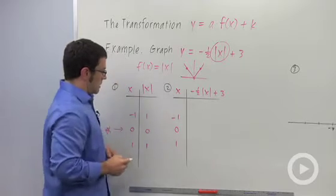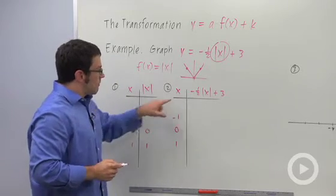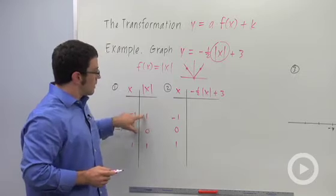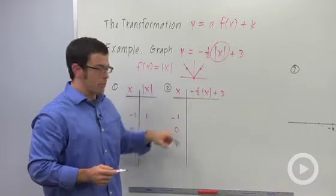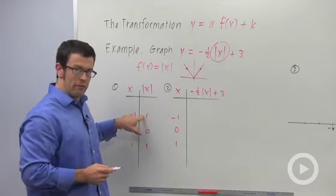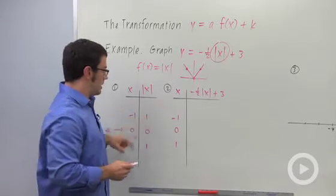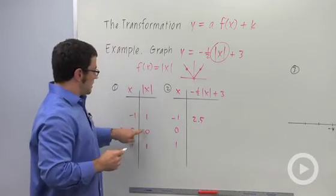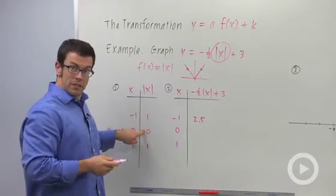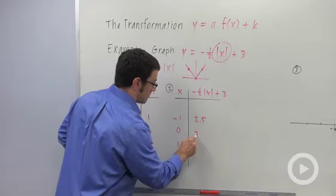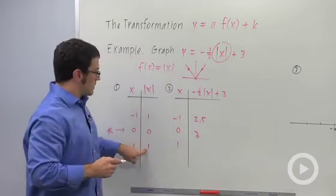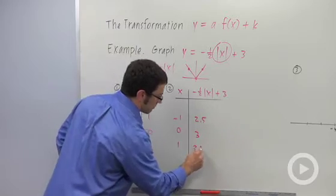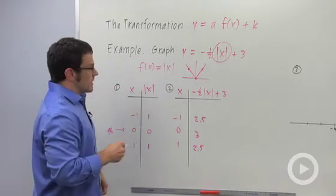And then for each of these absolute value of x values, I'm going to multiply them by negative one-half and add 3. So 1 times negative one-half is negative one-half, plus 3 is 2.5. 0 times negative one-half is 0, plus 3 is 3. And 1 times negative one-half is negative one-half, plus 3 is 2.5.